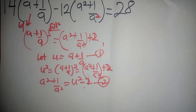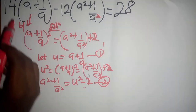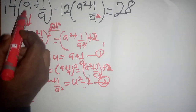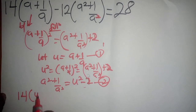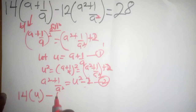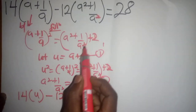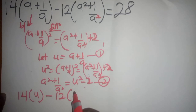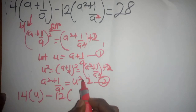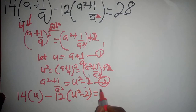Now since we have both equations, we can substitute everything into the general equation. The general equation becomes: 14(a + 1/a) - 12(a² + 1/a²) = 28, which substituting gives us 14u - 12(u² - 2) = 28.